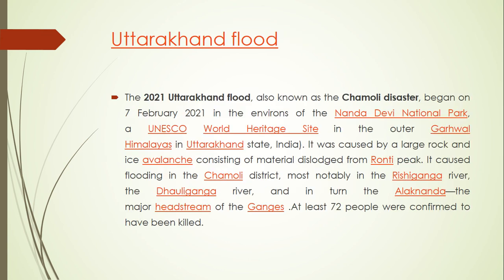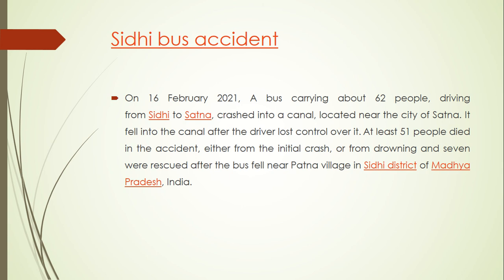The 2021 Uttarakhand flood, also known as the Chamoli disaster, began on 7th February 2021 in the vicinity of Nanda Devi National Park, a UNESCO World Heritage Site in the outer Garhwal Himalayas. It was caused by a large rock and ice avalanche from material dislodged from Ronti Peak. It caused flooding in Chamoli district, notably in the Rishiganga River, the Dhauliganga River, and the Alaknanda — a major headstream of the Ganga. At least 72 people were confirmed killed.